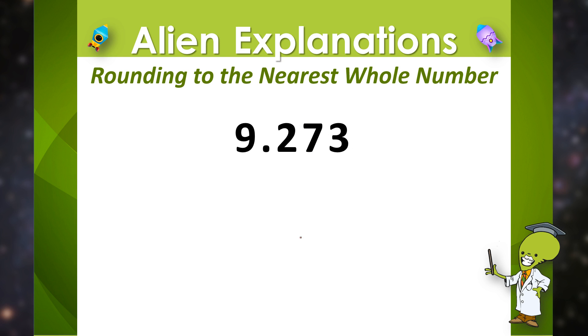Now let's round 9 and 273 thousandths to the nearest whole number. So we know that 9 is our whole number, and we know that 9 and 273 thousandths is between 9 and 10.